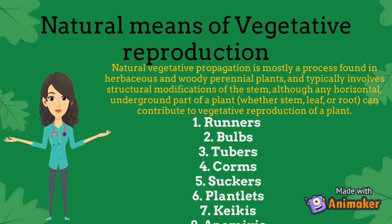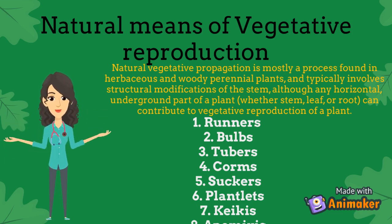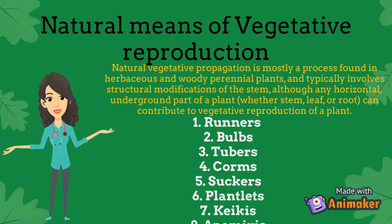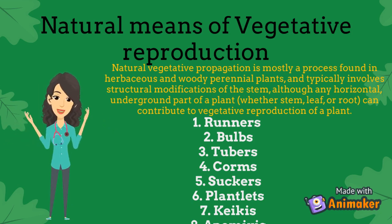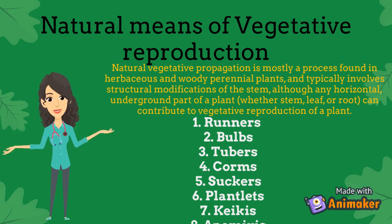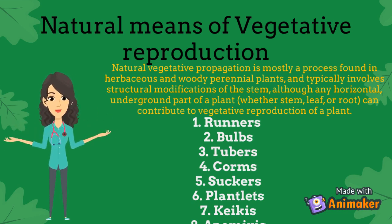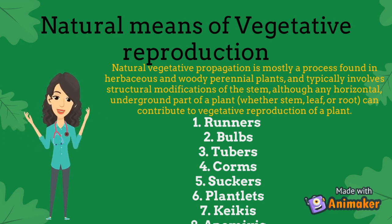An example of a plant that uses plantlets is Bryophyllum, also known as mother of thousands, for its many plantlets. Keikis are additional offshoots which develop on vegetative stems or flower stalks of several orchid genera.